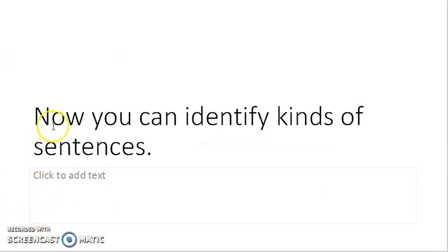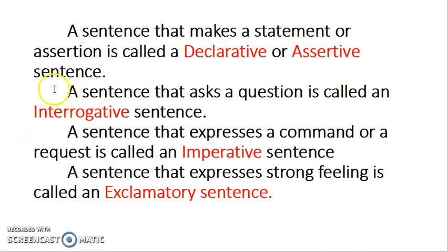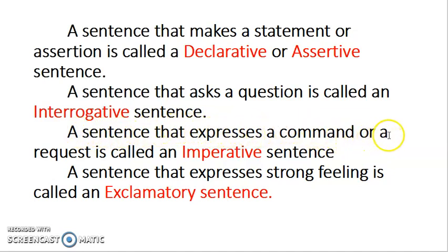Now you can identify kinds of sentences. Let us revise once again. A sentence that makes a statement or assertion is called a declarative or assertive sentence. A sentence that asks a question is called an interrogative sentence. A sentence that expresses a command or request is called an imperative sentence. A sentence that expresses strong feeling is called an exclamatory sentence. Try to remember these definitions.